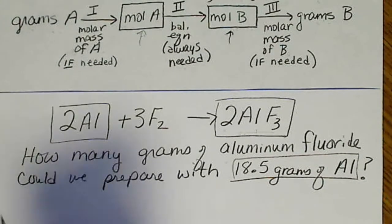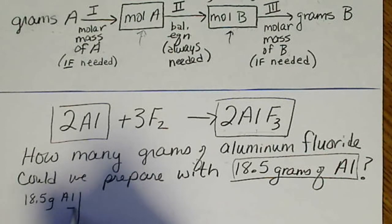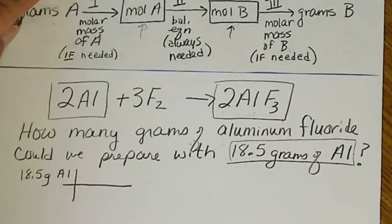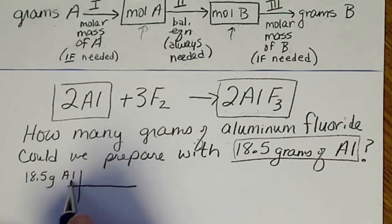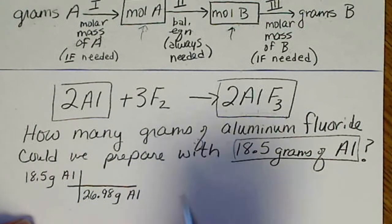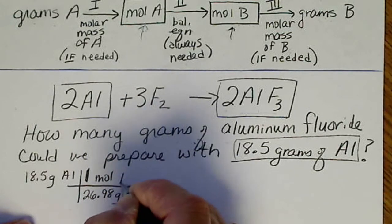So if we just get started on that problem, we have 18.5 grams of aluminum. And we look on the periodic table, and aluminum weighs 26.98. So the formula only is where we get that mass. So there's that many grams of aluminum per big fat one mole of aluminum.